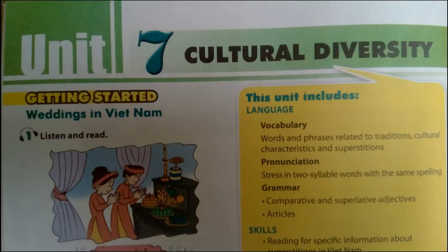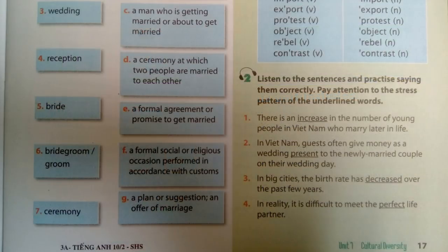Unit 7, Page 17 — Language. Activity 2: Listen to the sentences and practice saying them correctly. Pay attention to the stress pattern of the underlined words. 1. There is an increase in the number of young people in Vietnam who marry later in life.